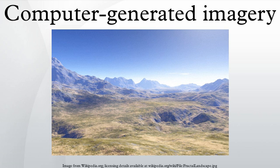While computer-generated images of landscapes may be static, the term computer animation only applies to dynamic images that resemble a movie. In general, the term computer animation refers to dynamic images that do not allow user interaction, while the term virtual world is used for interactive animated environments. Computer animation is essentially a digital successor to stop-motion animation of 3D models and frame-by-frame animation of 2D illustrations. Computer-generated animations are more controllable than physically-based processes such as constructing miniatures for effects shots or hiring extras for crowd scenes.